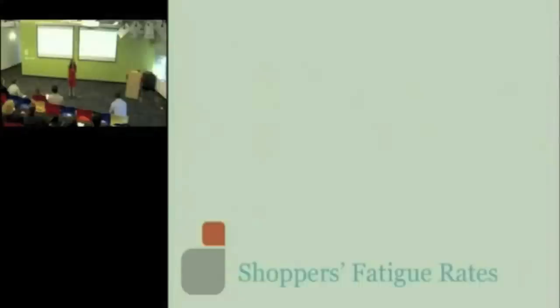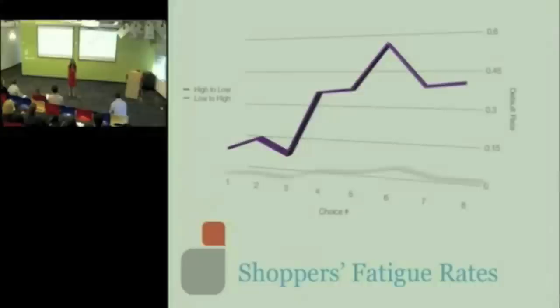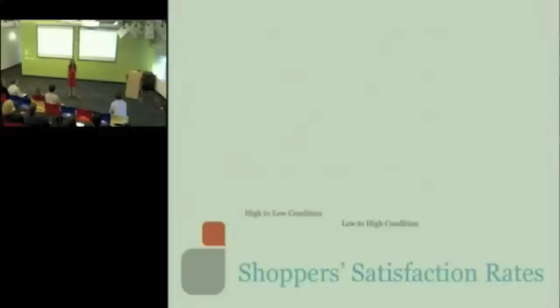So here's what you get. High to low, they start off engaged, then they start hitting the default. Low to high, they're just hanging in there. Now we also asked them after they paid down over 30,000 in euros, how satisfied were they with their car that they just purchased? And you know, from the perspective of the vendor, they want you to be happy in contemplating your next car. High to low, not so happy. Low to high, much happier.